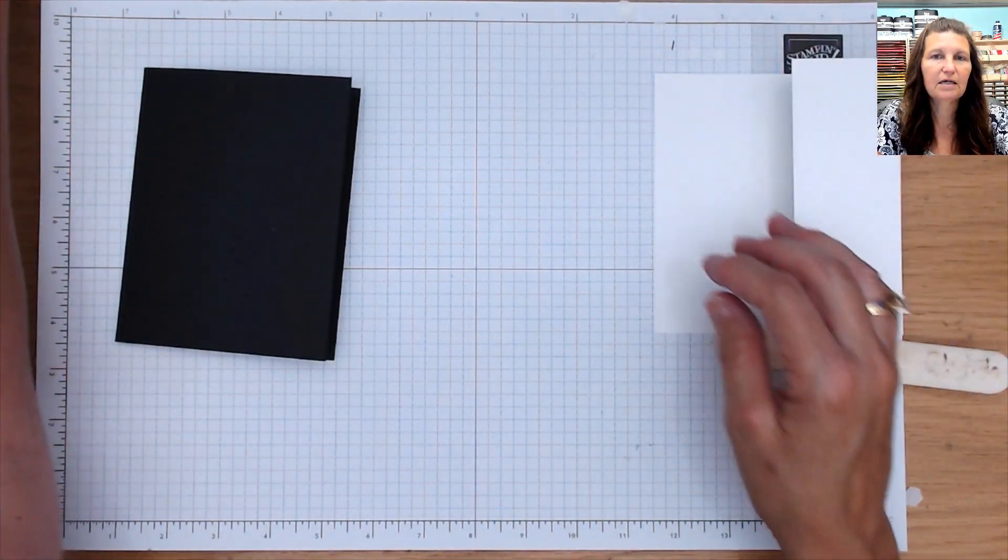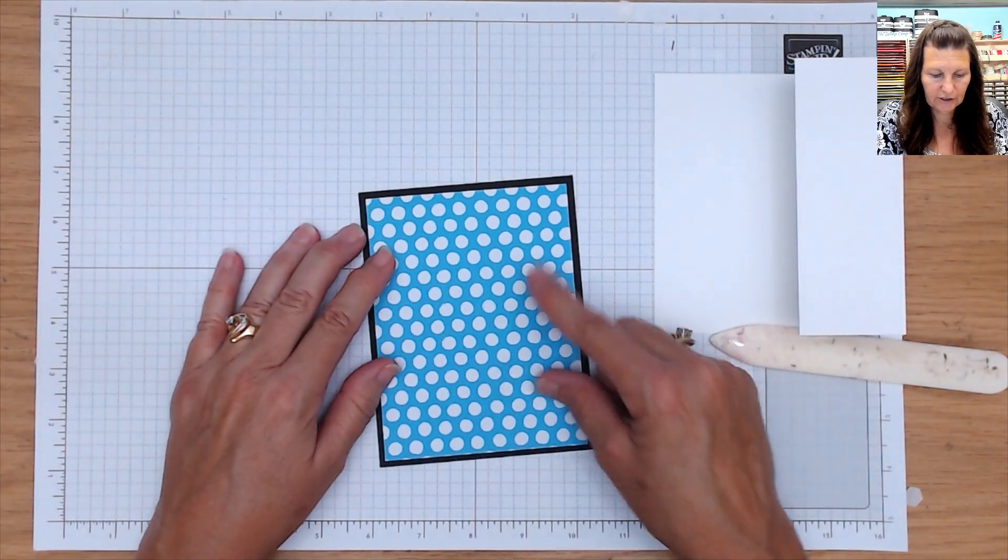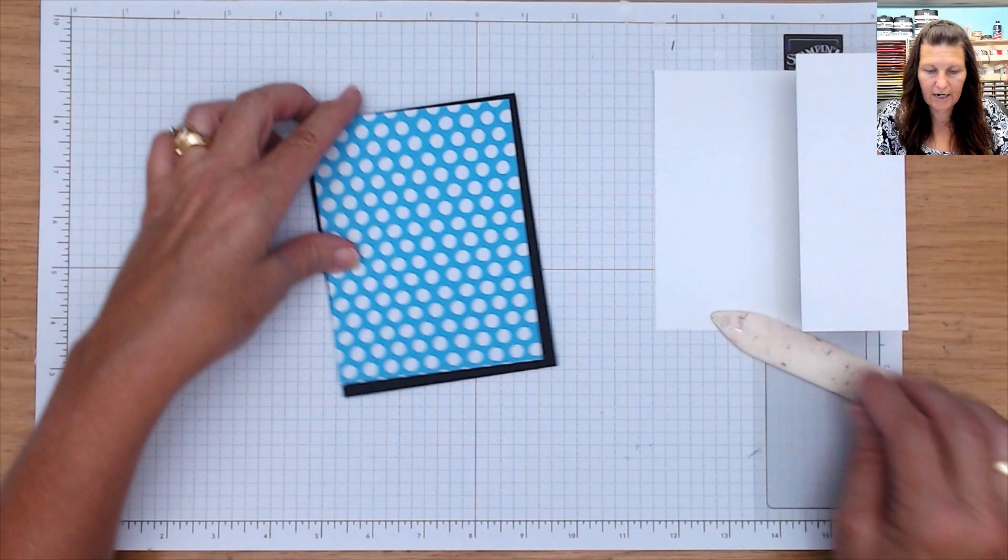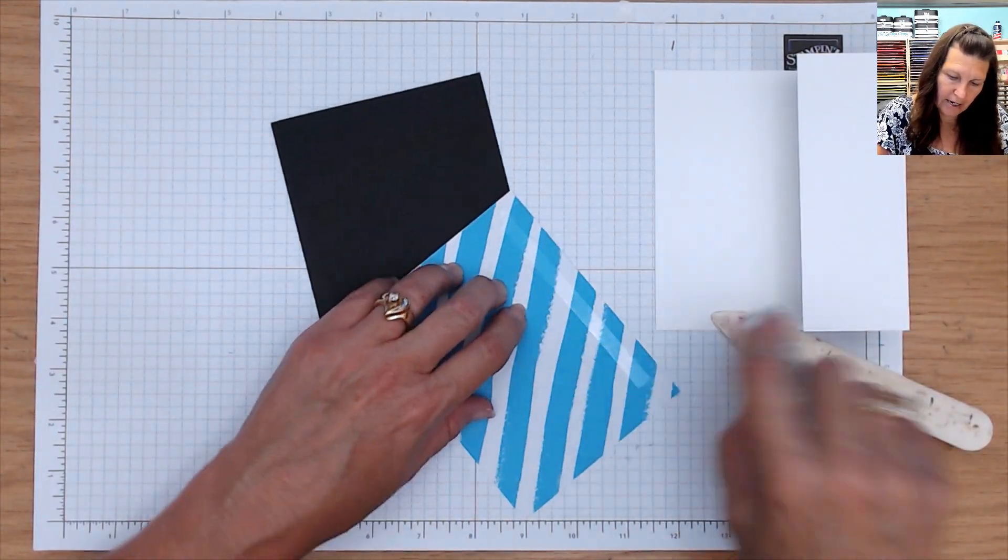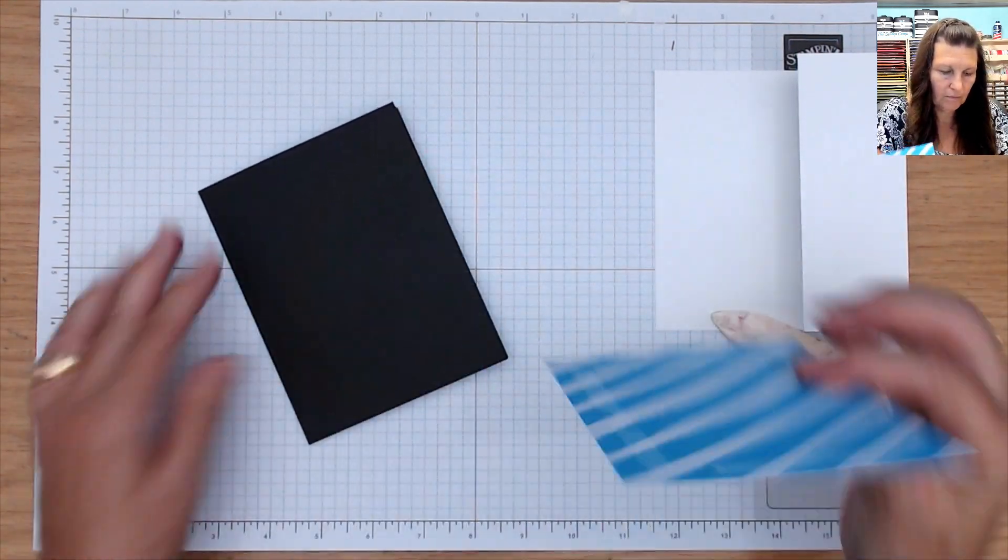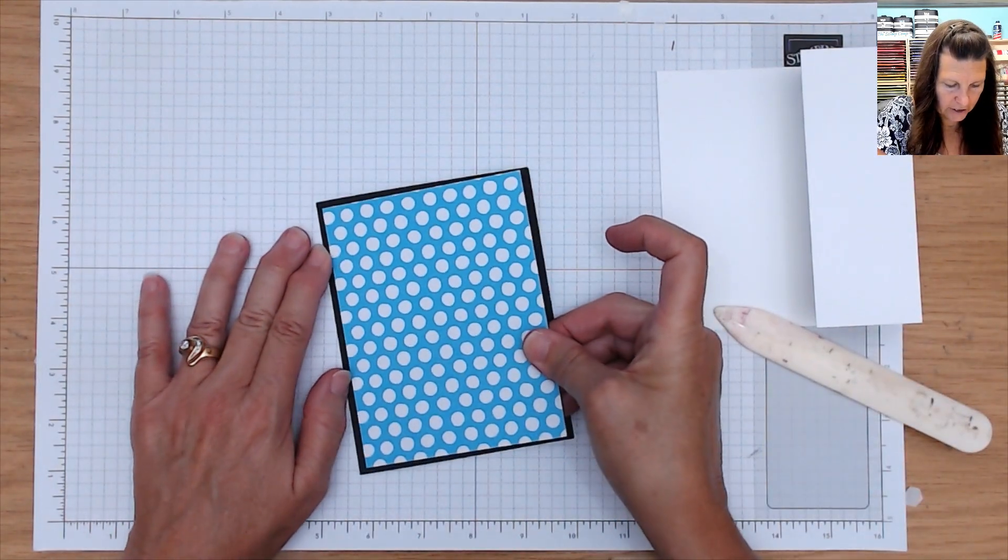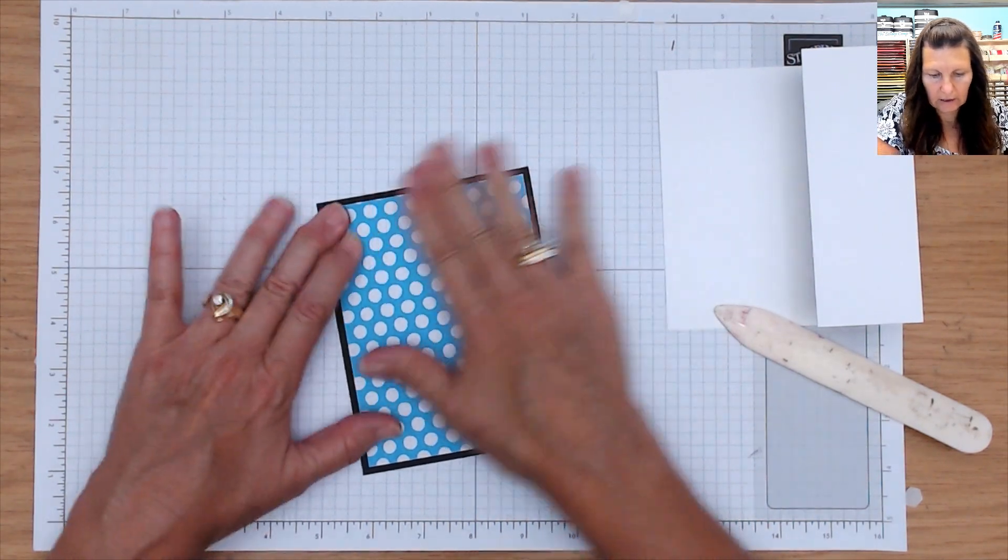Then I took a piece of the Tahitian Tide Designer Series Paper, and we're going to put that on just like that. So let me go ahead and attach my adhesive. And we're going to center that on the front, like so.